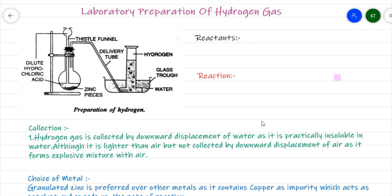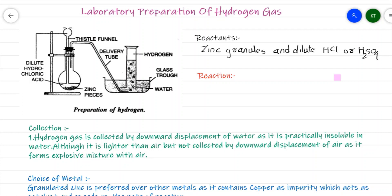Let us discuss the laboratory preparation of hydrogen gas. In the laboratory, hydrogen gas is prepared by the action of dilute acid on zinc granules. The reactants are zinc granules and dilute HCl or dilute H₂SO₄.